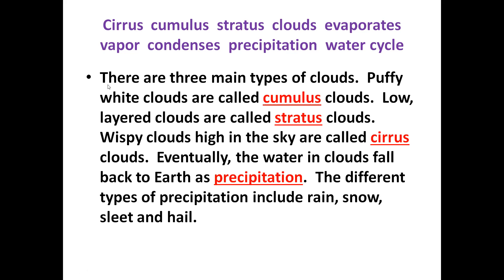The next paragraph: there are three main types of clouds. Puffy white clouds are called cumulus clouds. Low layered clouds are called stratus clouds. Wispy clouds high in the sky are called cirrus clouds. Eventually the water in clouds falls back to earth as precipitation. The different types of precipitation include rain, snow, sleet, and hail.